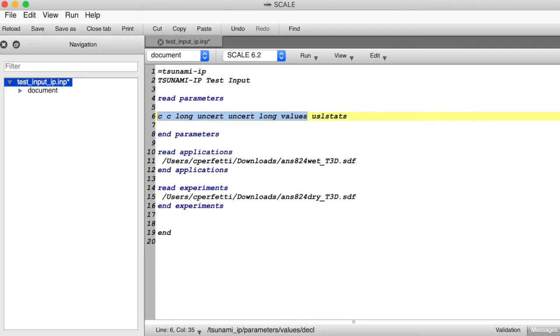Tsunami IP has many more input parameters and can compute many more versions of these similarity metrics than I have time to discuss today, and I'd recommend reading through the tsunami IP manual if you're interested in learning more about these other similarity metrics or these other input options.